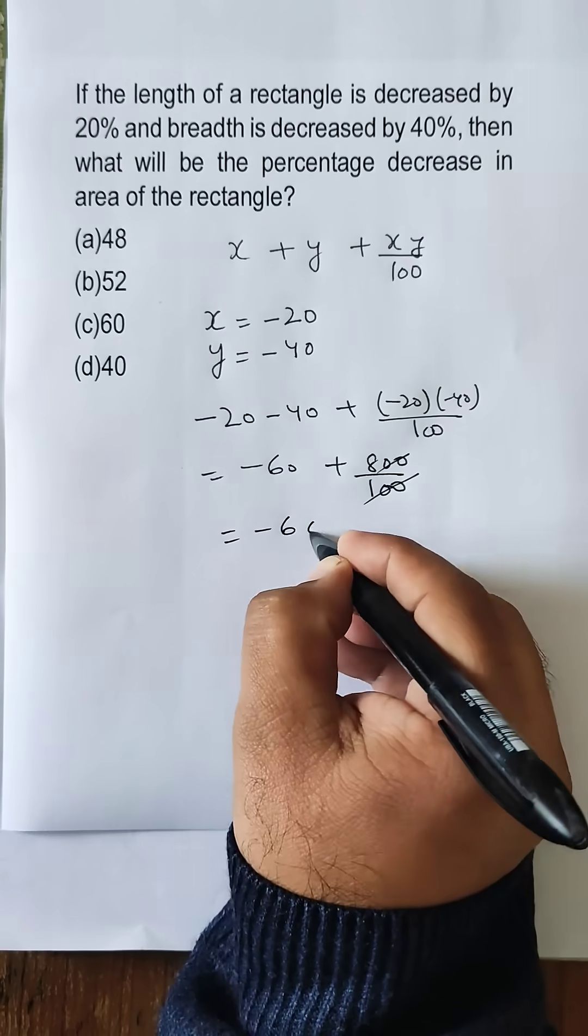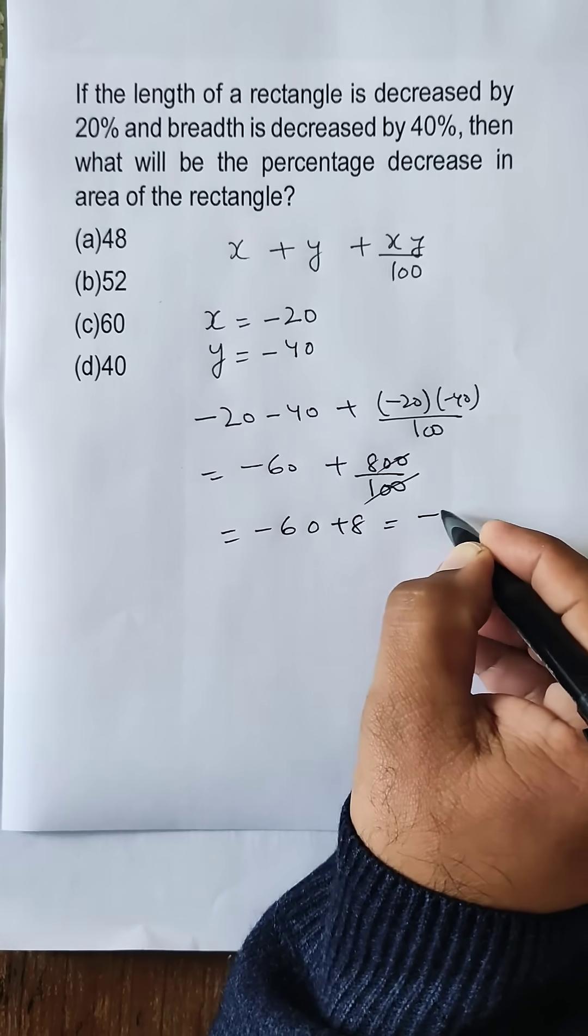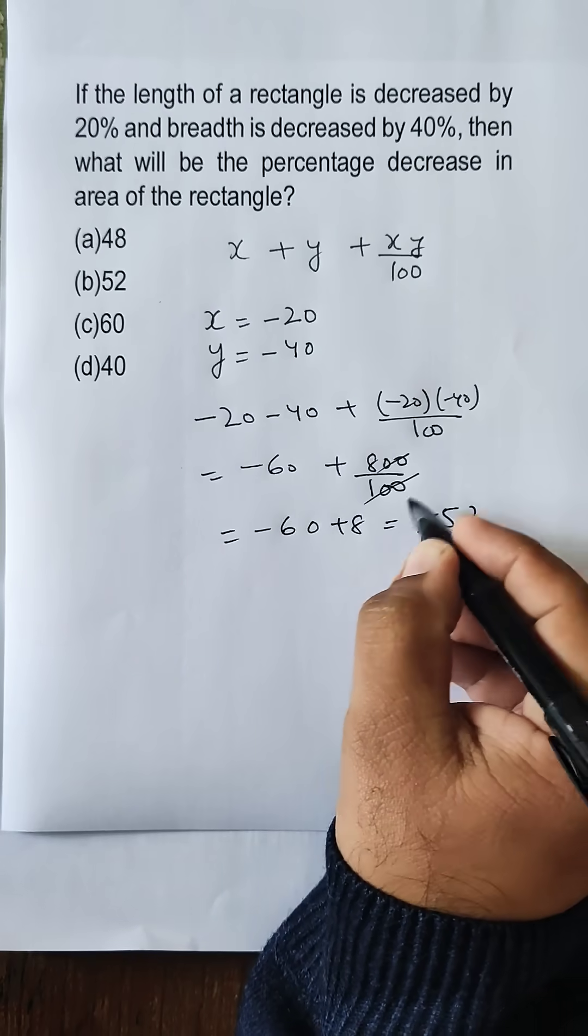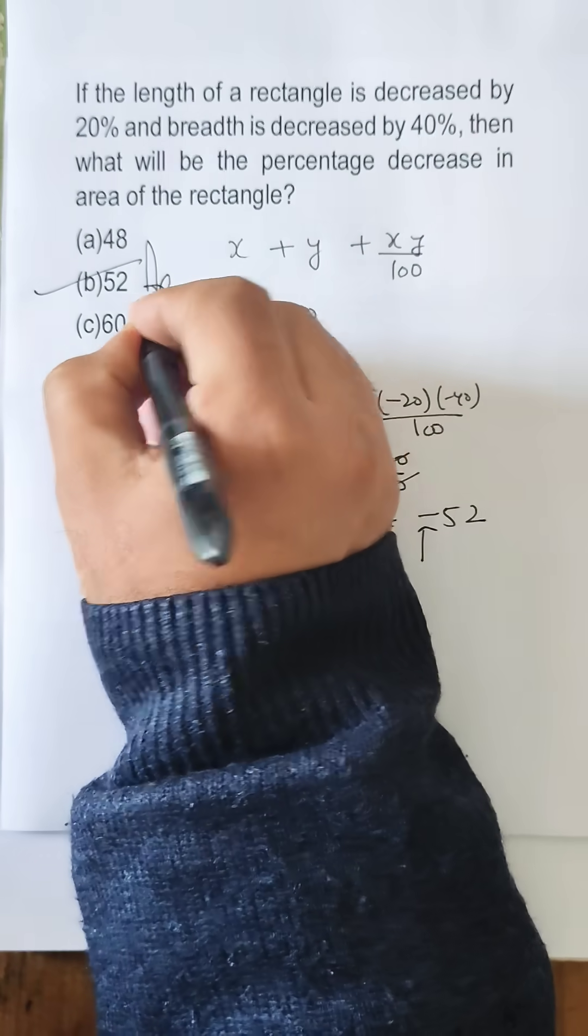This cancels, and we are left with minus 60 plus 8, which is minus 52. This minus sign shows that there is a decrease, and 52 will be our answer.